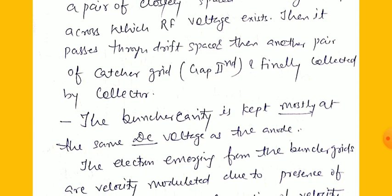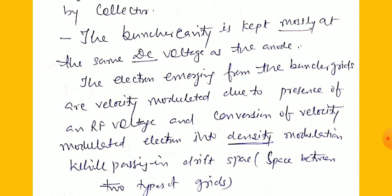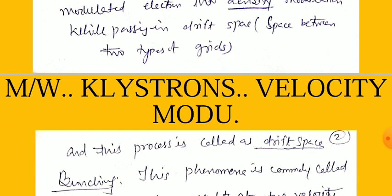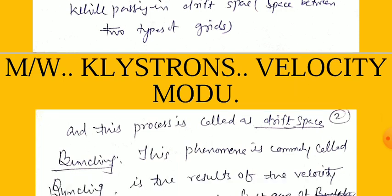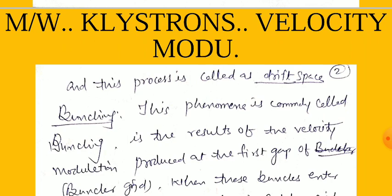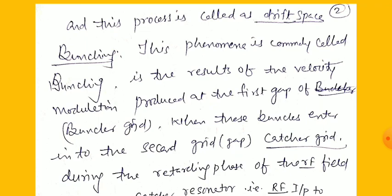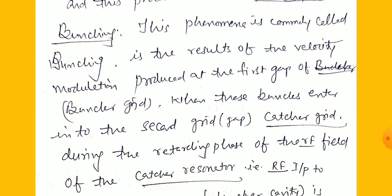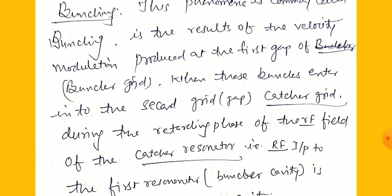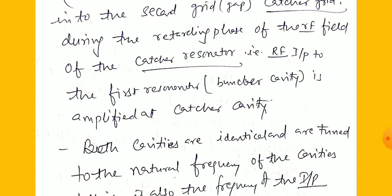The buncher cavity is kept at mostly the same DC voltage as the anode. Electrons emerging from the buncher gate are velocity-modulated due to the presence of an RF voltage. The conversion of the velocity-modulated electrons into density modulation occurs while passing through the drift space — the gap between the two grids. This process is called drift space bunching.